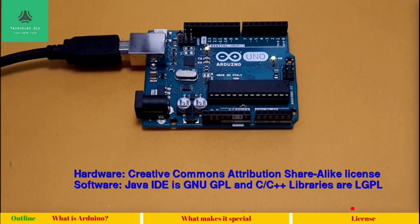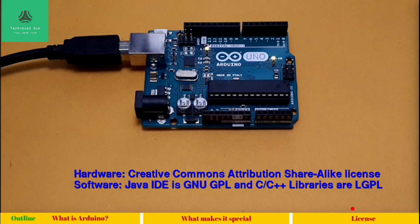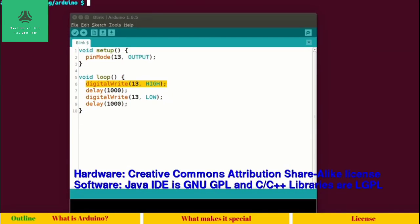This brings us to the last topic of the session: license. Arduino has two — in fact, three — different licenses. For hardware, it uses Creative Commons, which means you are free to make remixes, transform, or build upon the material, as long as you distribute it under the same license. The software — the Java IDE written in Java — is under the GNU GPL license.